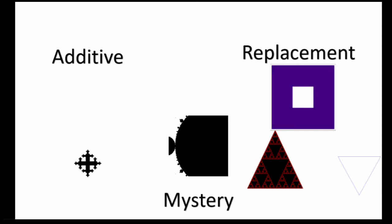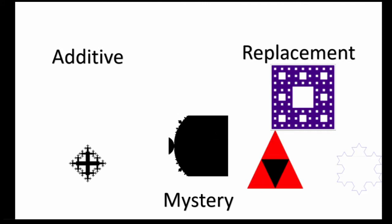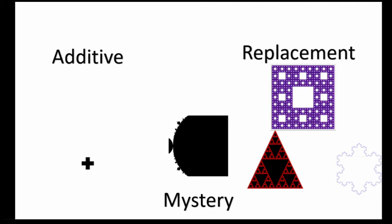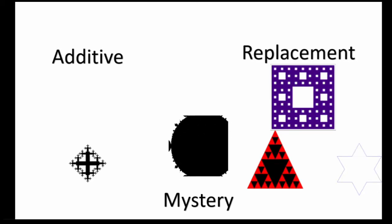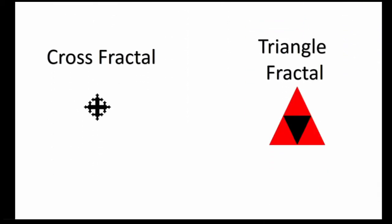Some fractals are harder to group than others. For example, I'm not sure which category a Mandelbrot fractal would go, or if it's a different generation method. To illustrate how both types of fractals are made, we will be taking a closer look at two fractals: the cross fractal and the triangle fractal.